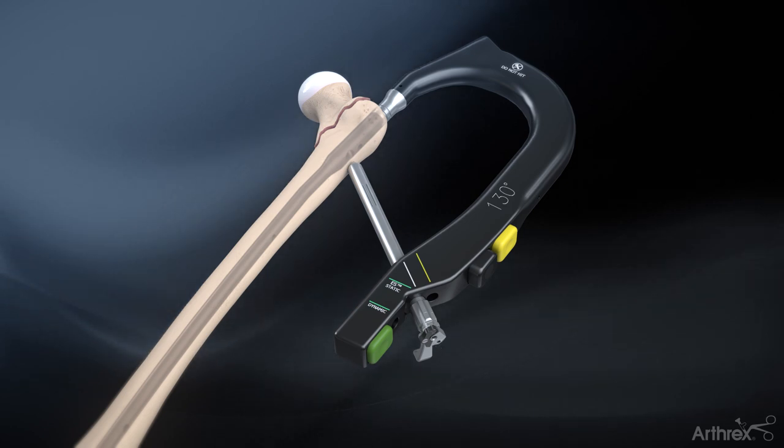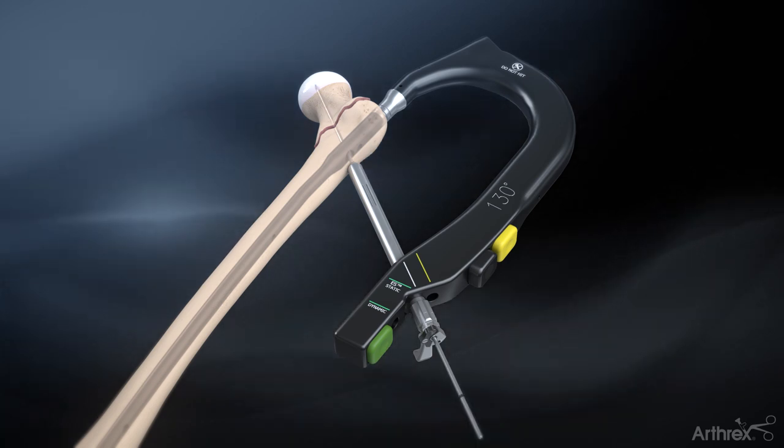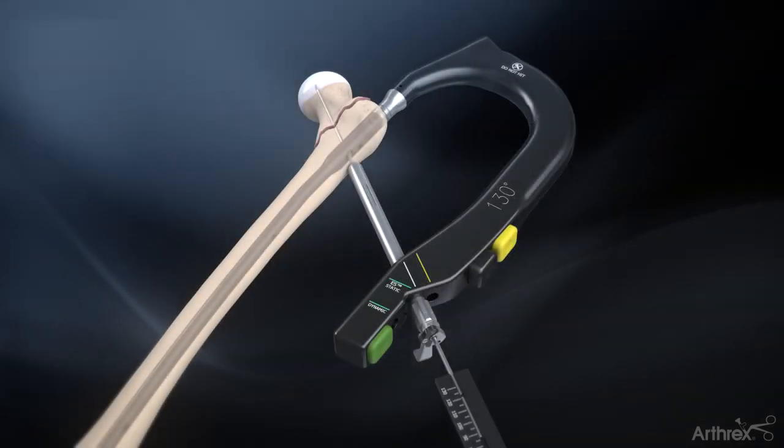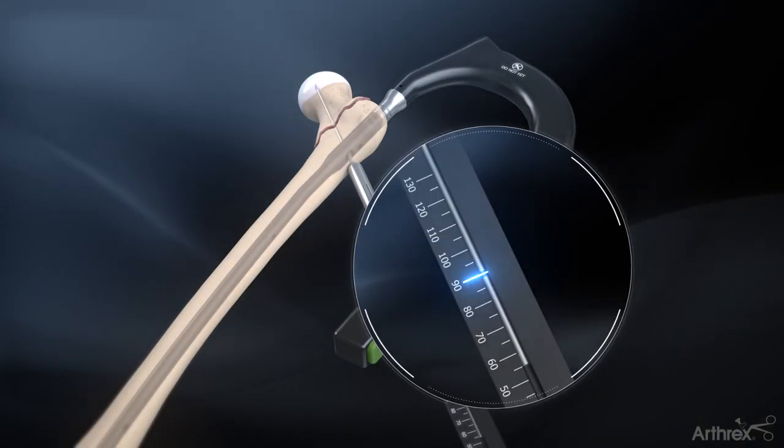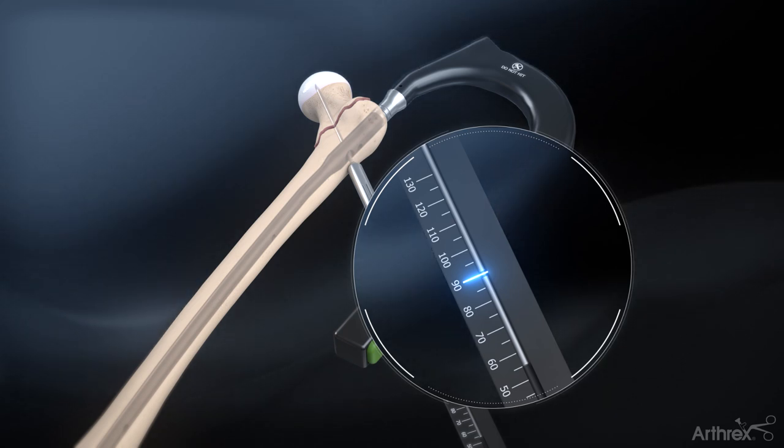Remove the obturator and place the 3.2 mm lag screw guide pin through the pin guide. Verify the pin depth and trajectory using fluoroscopy. Place the guide pin depth gauge with the flat end against the pin guide under the 3.2 mm lag screw guide pin and read the measurement.